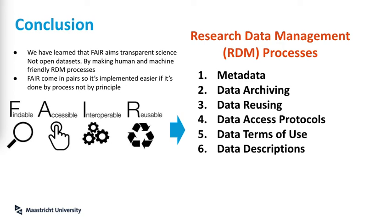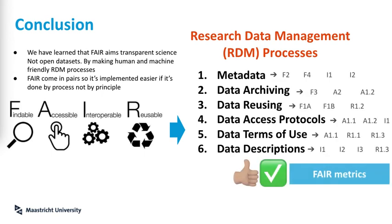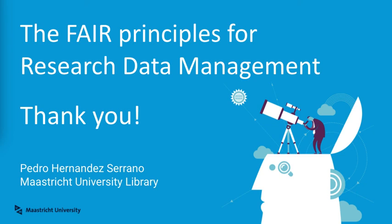Conclusion. We have learned that FAIR aims for transparent science, not open datasets — by making human and machine friendly research data management processes. FAIR comes in pairs, so it is implemented by process, not by principles, which are broad. Note that the RDM processes have a correspondence with the FAIR metrics to measure their maturity, but this is another lecture. Thank you very much.